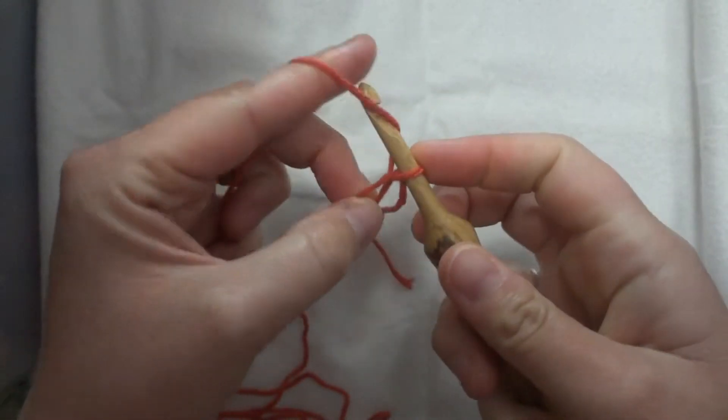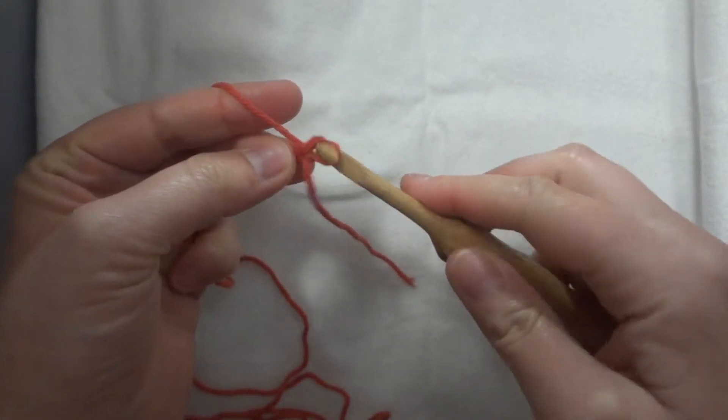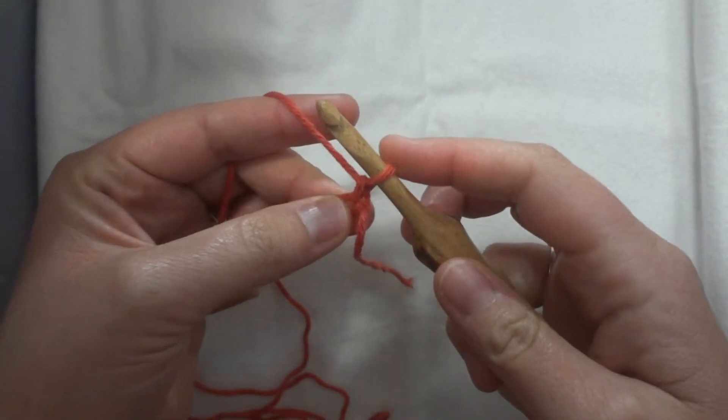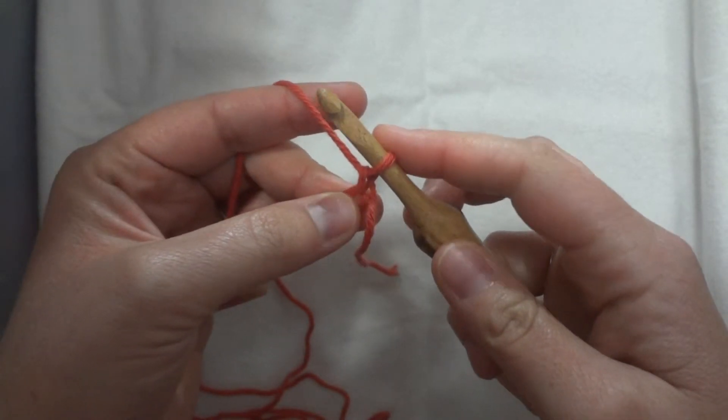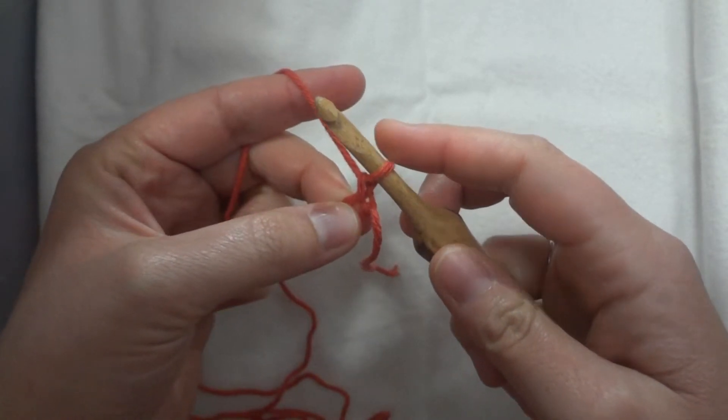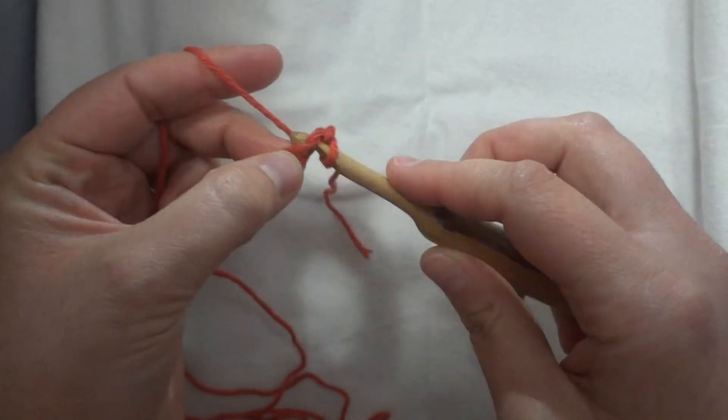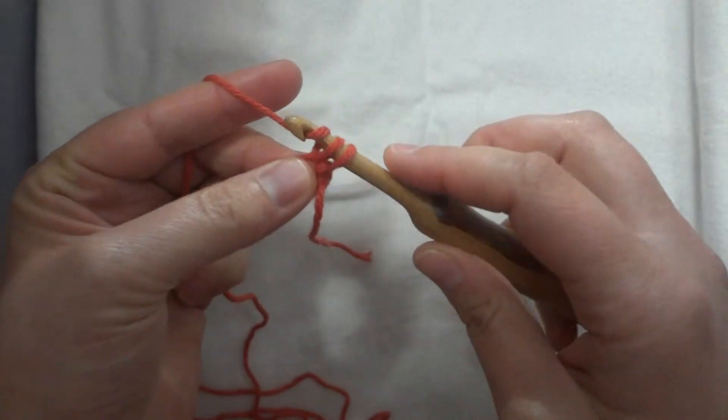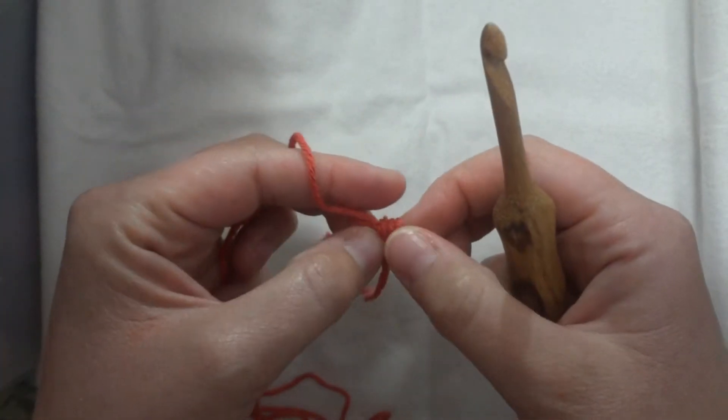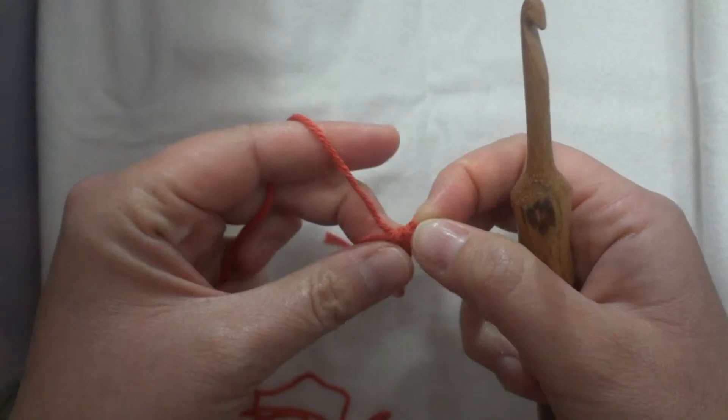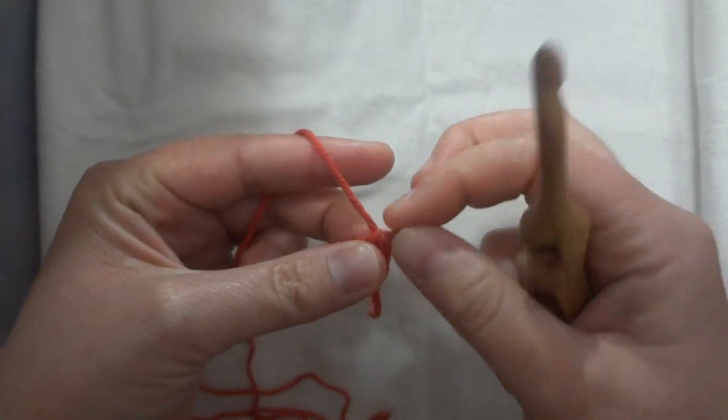Now I can begin by chaining one if I'm going to single crochet. I'll do two or three if I'm going to double crochet, but I'm going to single so I chain one. And now I'm just going to put my hook in here and work six single crochet.